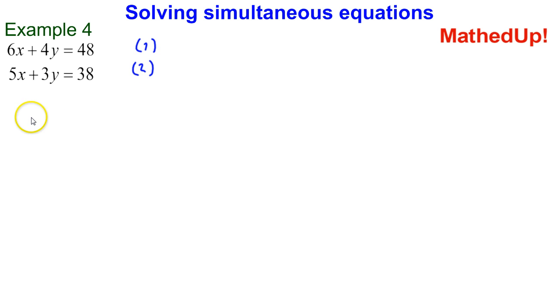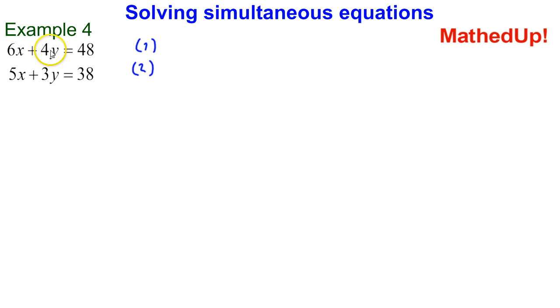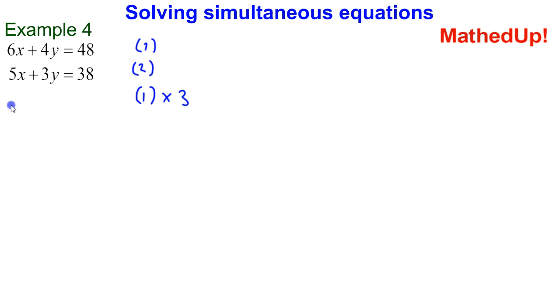So, if I call this equation 1 and I call this equation 2, what I'm now going to do is decide on either a common multiple of 6 and 5 or a common multiple of 4 and 3. I'm going to choose to make the coefficients of y the same, which means I need a common multiple of 4 and 3, which is going to be 12. So, to change this to a 12, I need to multiply equation 1 by 3, giving me 18x plus 12y is equal to 144.